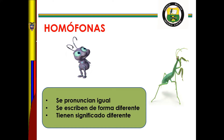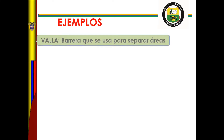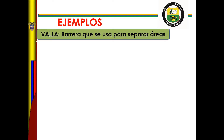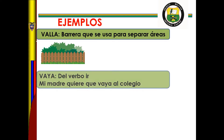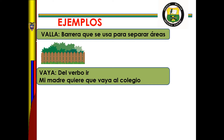Estas son las palabras homófonas. Ejemplos: Vaya con V y con L, barrera que se usa para separar áreas. Vaya con V y con Y, del verbo ir. Mi madre quiere que vaya al colegio.